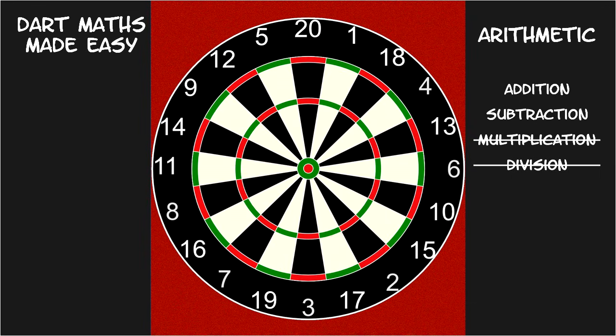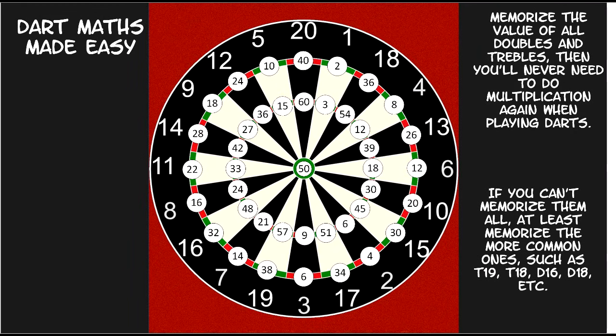The good news is, you already know some of them. For example, what did I score with this dart? 60 points of course. I would hope that no dart player ever has to stop and think, what's 20 multiplied by 3. Here are all the values. Pause the video and take a screenshot if you wish. Study them until they become second nature. If you don't feel you can memorize them all, at least focus on the more common values such as treble 19, treble 18, double 16, double 18, etc.